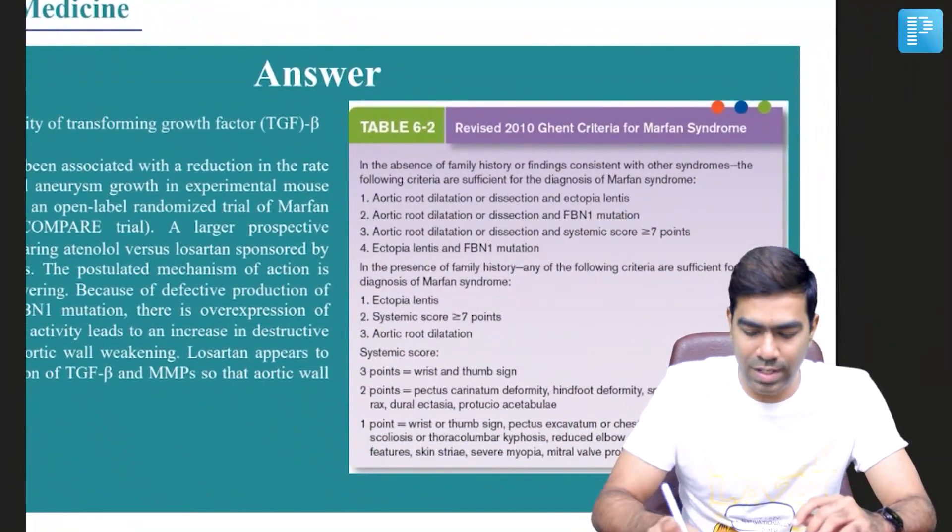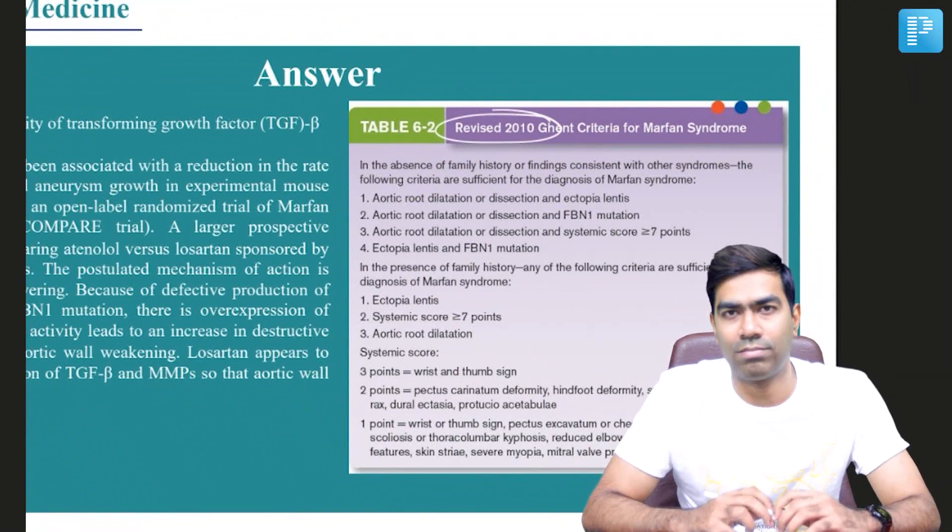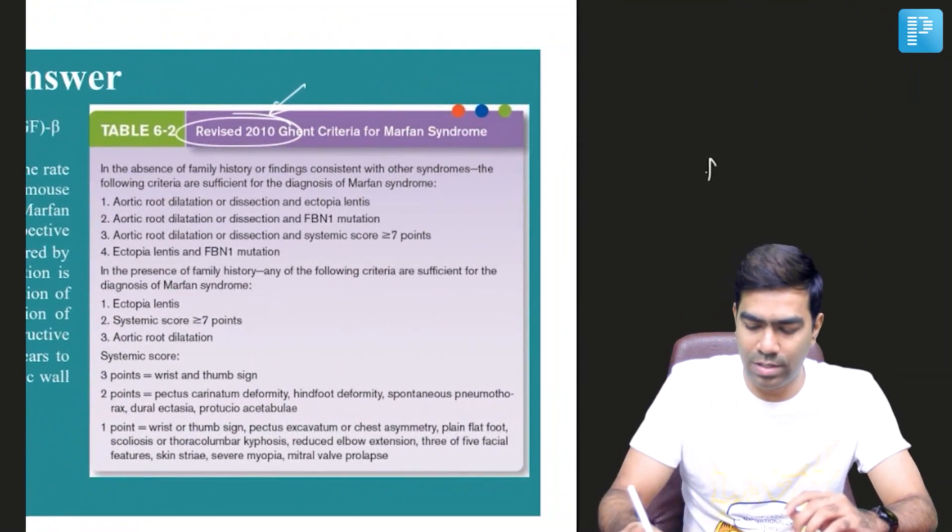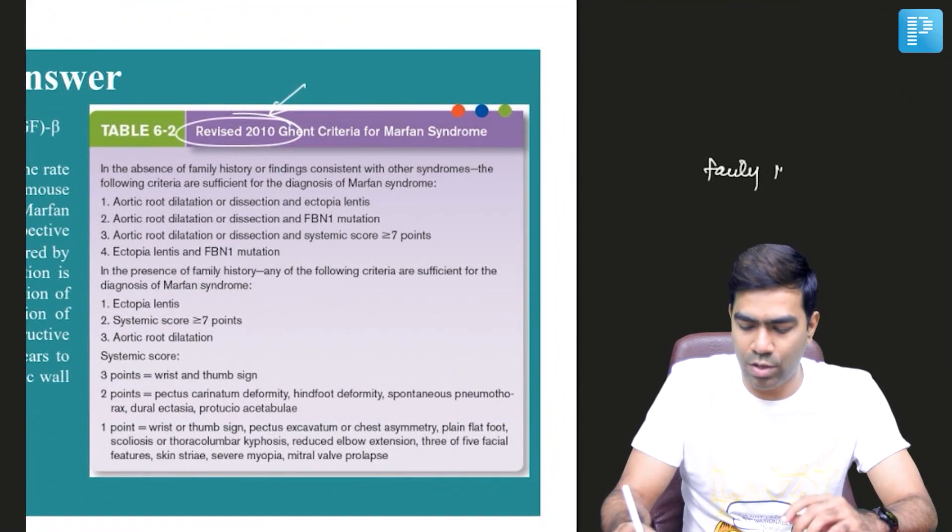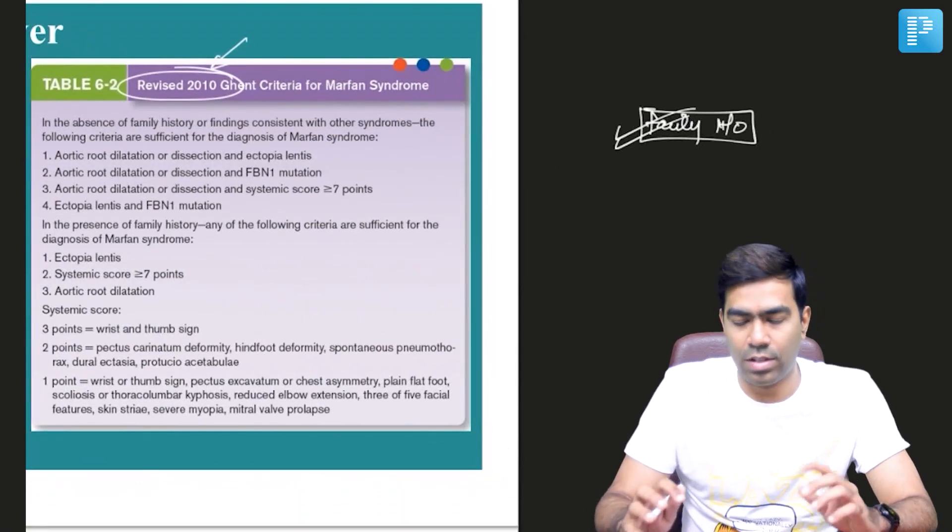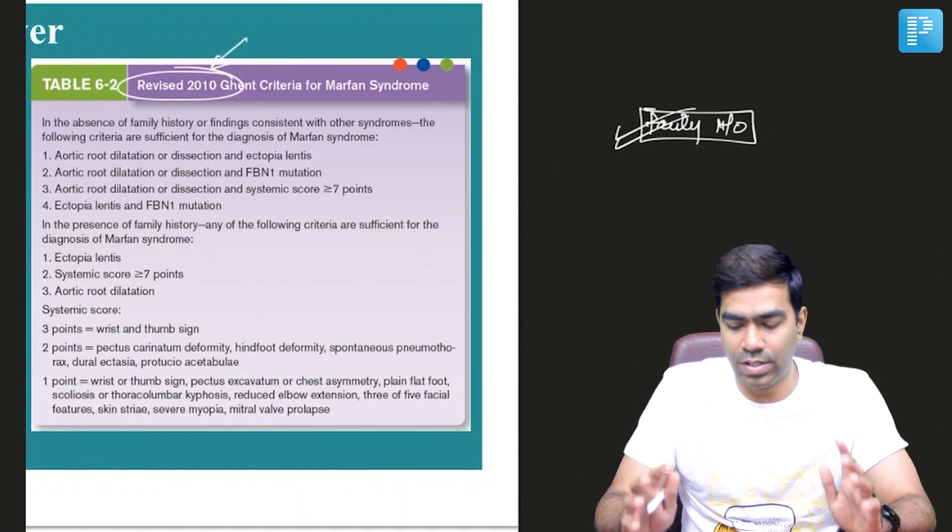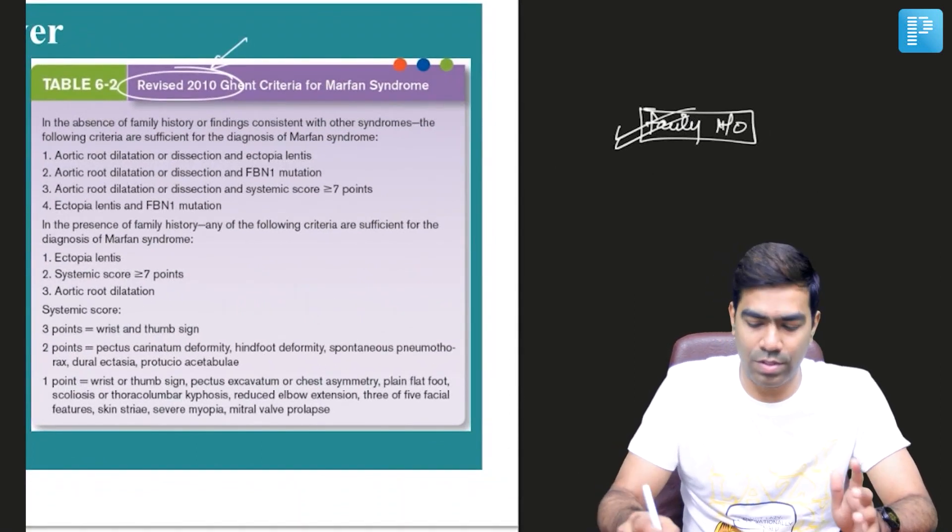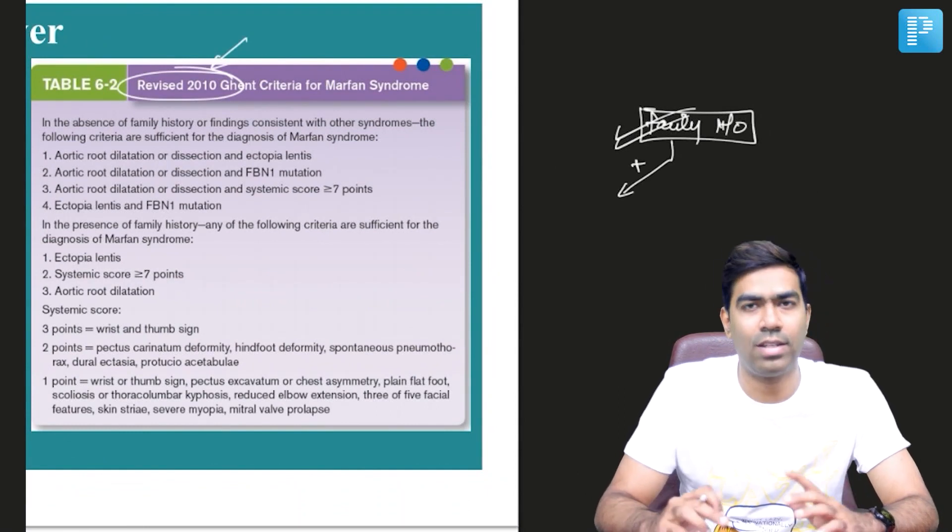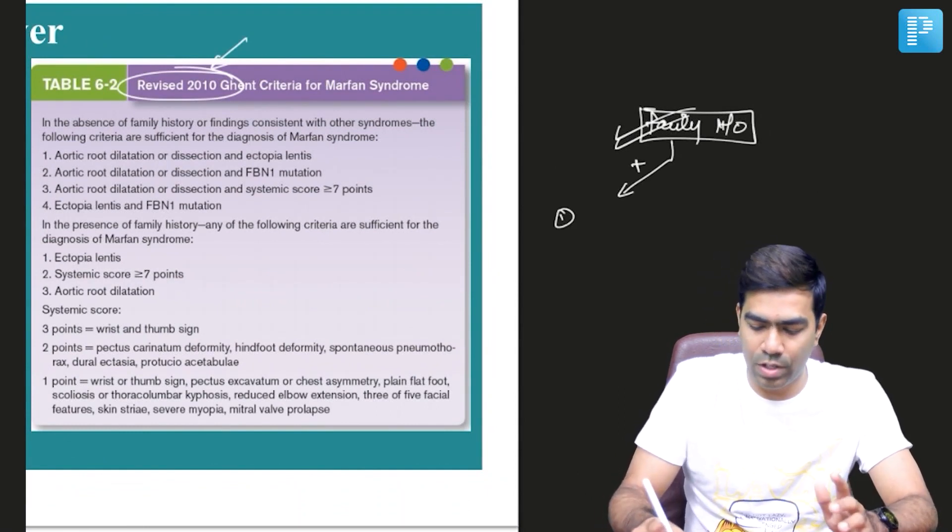Based on these criteria, you can diagnose Marfan syndrome using a few features. First, look for family history of Marfan syndrome. If present, diagnosis becomes very simple—all you need is any one of: aortic root dilatation, ectopia lentis, or systemic features with a systemic score ≥7.